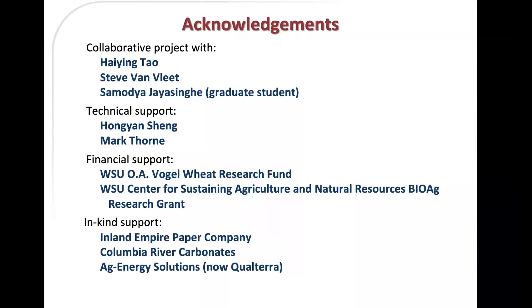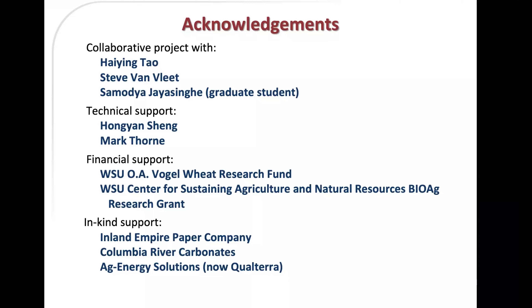This was a collaborative project with Haiying Tao, Steve Van Vliet, and graduate student Sam Odia Jaiasing. We had technical support from Hong-Yen Shing and Mark Thorne, and financial support from the Vogel Wheat Research Fund and the CSANR BioAg Research Grant. In-kind support was provided by Inland Empire Paper Company, Columbia River Carbonates, and Ag Energy Solutions for Biochar, now known as Qualterra. We also acknowledge Steve Jones with Best Test Labs, who helped with the lime need calculator, and Gudrun Mart with Columbia River Carbonates, who provided material for this study.